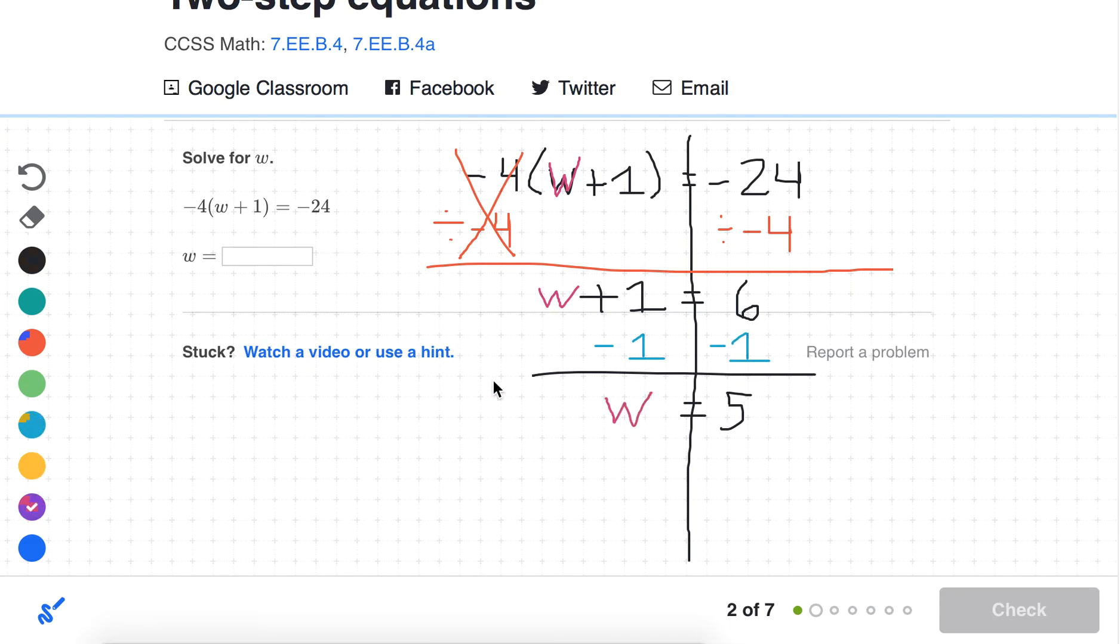The last thing I'm going to show you on this problem is you can always check your answer by taking it and plugging it back in to the variable. If w is indeed 5, then when we replace w with 5 and check our work, the equation should be true, meaning both sides should have the same value. On the right, we have 24. On the left, we would follow order of operations and do the parentheses first. We get 6, and lo and behold, negative 4 times 6 is 24. So we just verified that we got the right answer.